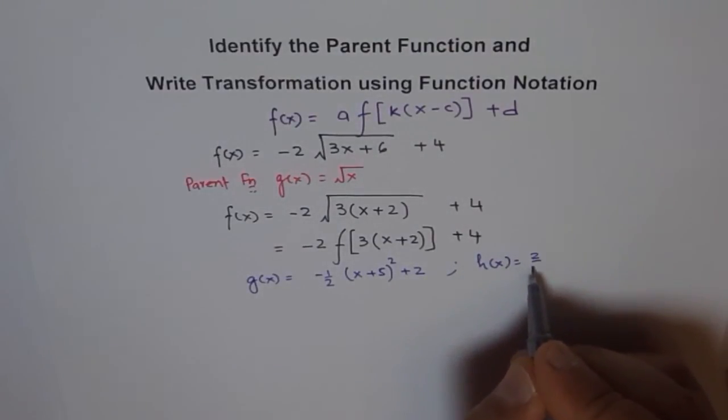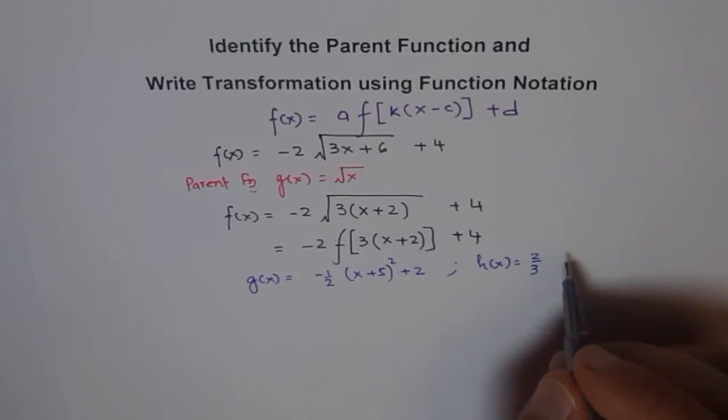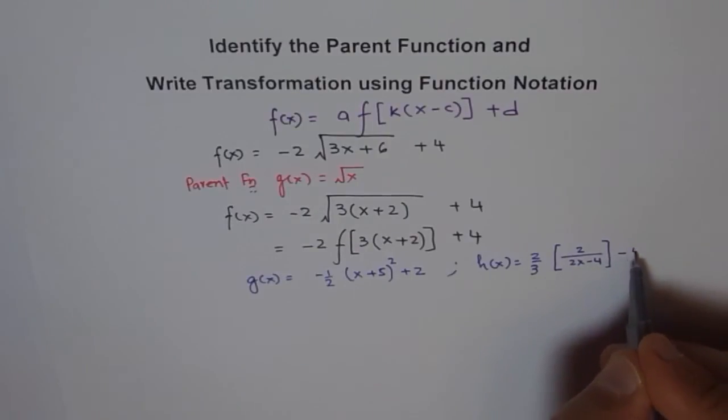And then you can also try this: h of x equals to 2 over 3, 2 over 2x minus 4, minus 5.